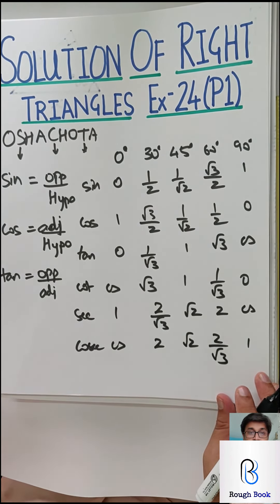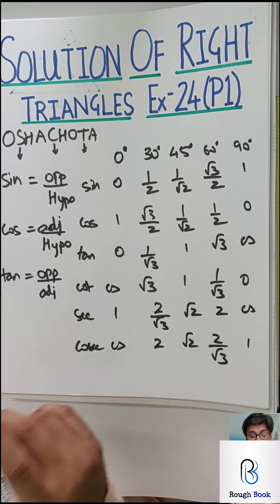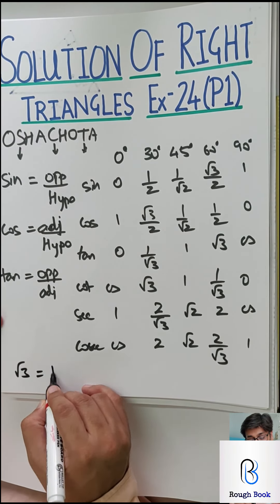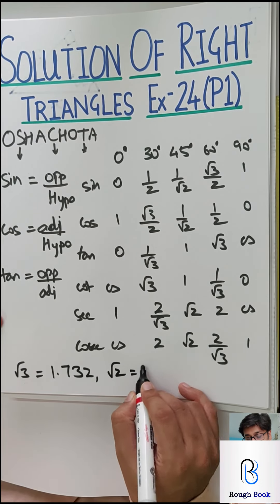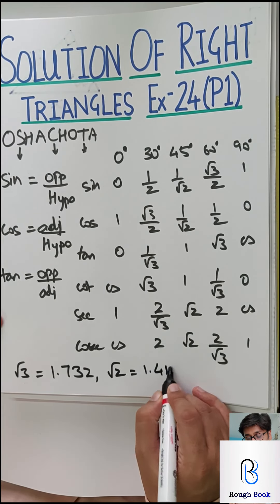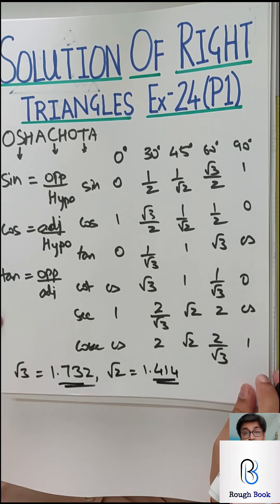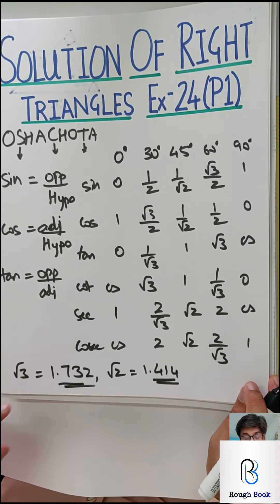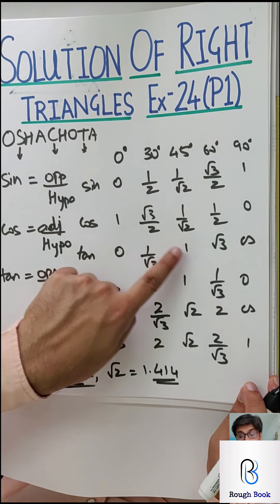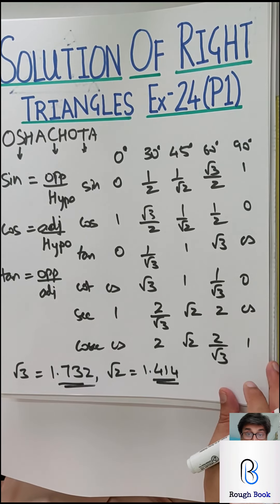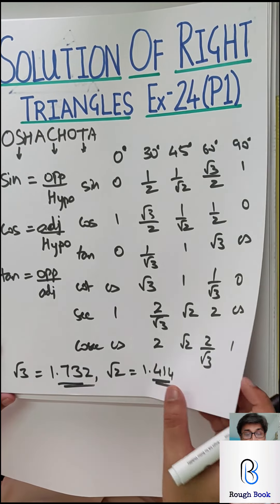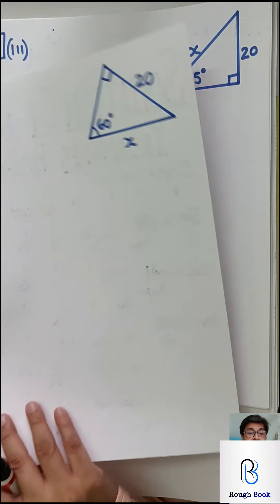Once you know these two things, the topic will become very simple. The last thing you need to know is the value of root 3: 1.732, and root 2: 1.414. These two values you are expected to know on your own. When you are doing the sums and you get root 3 or root 2, you are expected to substitute the values and then solve. So let's hit it.